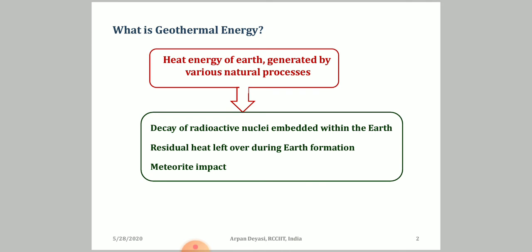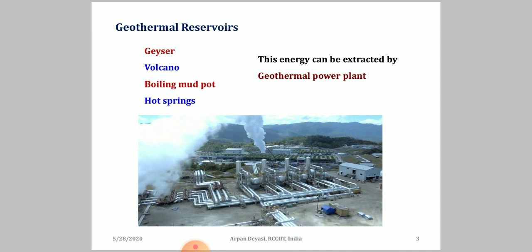Once we know these forms, geothermal energy can manifest in different forms such as volcanoes, hot springs, mud pots, and geysers — which you can search on Google. The volcano is known to all as a great example of how a huge amount of energy can be extracted from the Earth's surface. These different forms of geothermal energy can be extracted by proper design of a geothermal power plant.